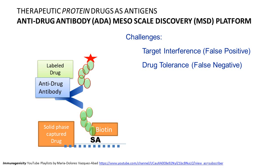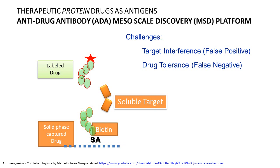Let's talk about target interference. Your drug is designed to bind a target. When that target is soluble, and you're detecting the blood from your patient — say this patient has absolutely no anti-drug antibodies but they have the soluble target — for example, if you're using an anti-VEGF as your drug, the patient has VEGF circulating. Or an anti-TNF, the patient can have TNF circulating in the blood. When you use the blood on this assay, because you've designed your drug to bind that soluble target, the soluble target binds the solid-phase captured drug and will also be detected by the labeled drug. This is why target interference produces false positive results.